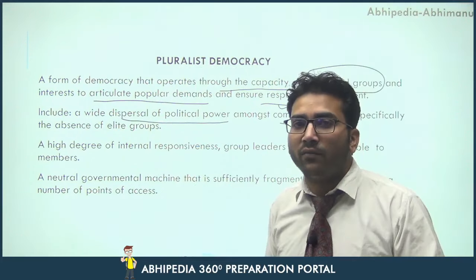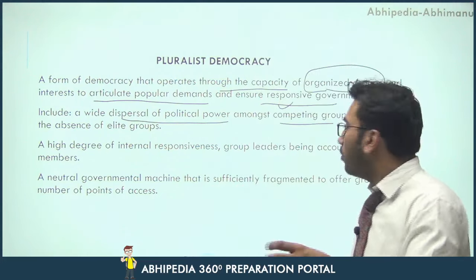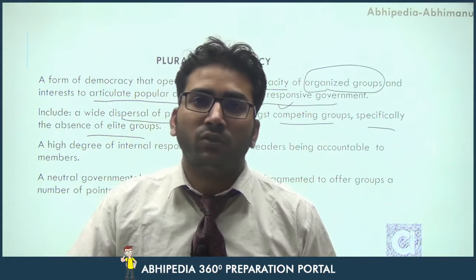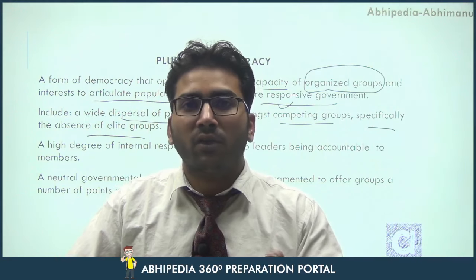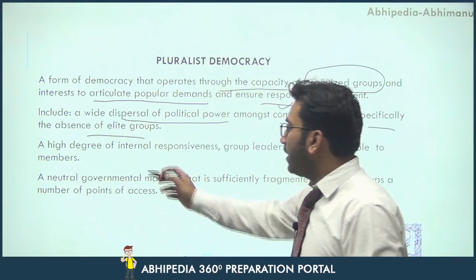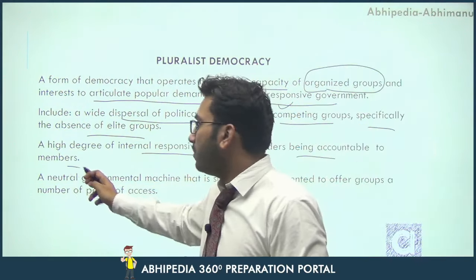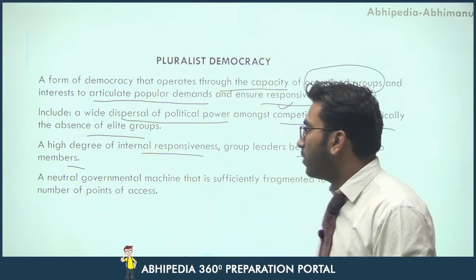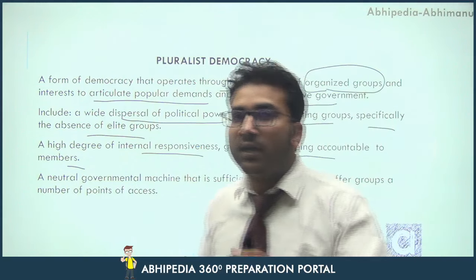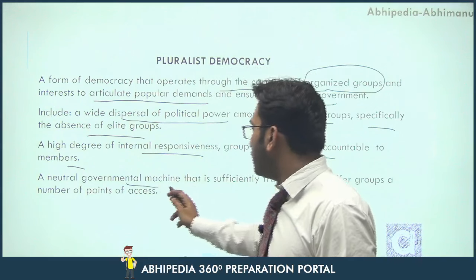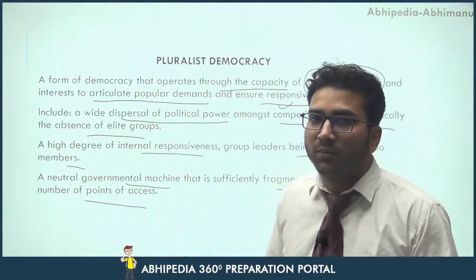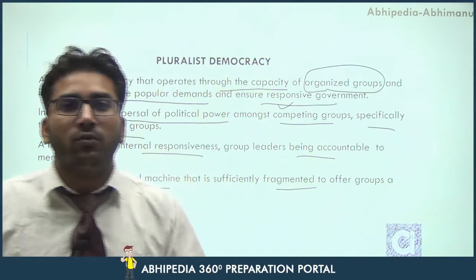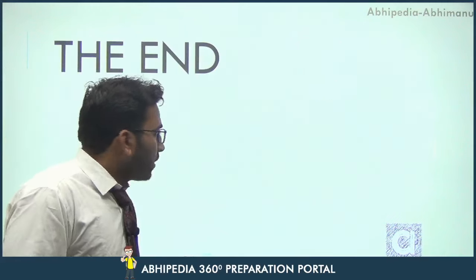Pluralist democracy leads to a responsible government. It includes a wide dispersal of political power amongst competing groups — for example, a number of competing business associations — with specifically the absence of any single elite group. There is a high degree of internal responsiveness, with group leaders being accountable to their members, similar to cooperative societies. Power is distributed and fragmented among a number of associations so that they run in a responsible and accountable manner, offering groups a number of points of access to government.